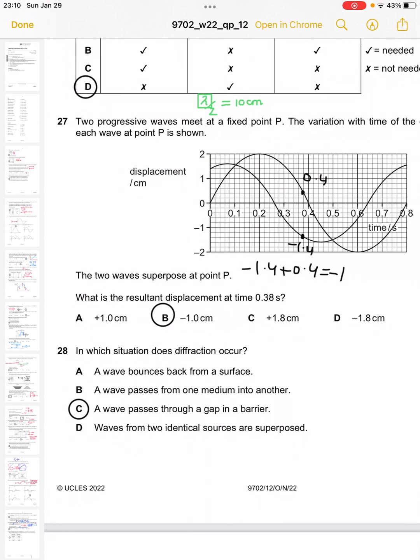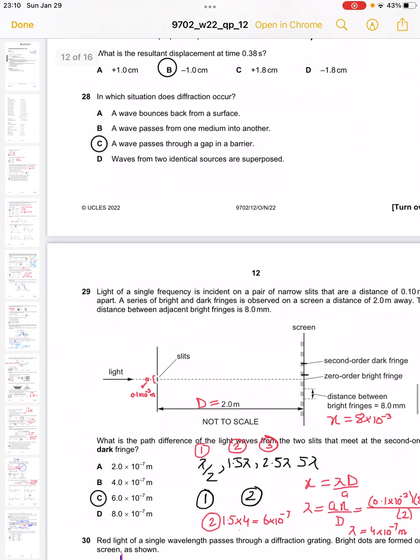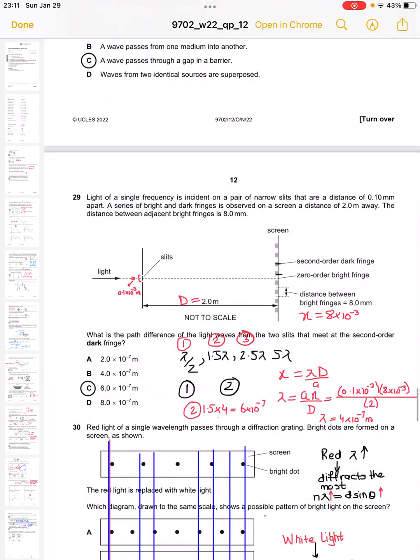Question 28 asks in which situation does diffraction occur. The appropriate answer is C - a wave passes through a gap in a barrier. Question 29 gives a situation where we're given the slit separation, the fringe separation, and the distance between the double slits and the screen. We need to find the path difference between the slits that meet at the second order.